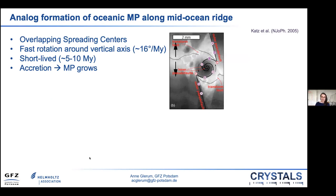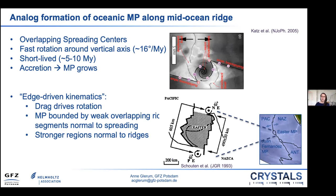What we've learned from studies like this is that oceanic microplates form between two overlapping spreading centers. They rotate fast around the vertical axis and are short-lived — five to ten million years — and during their lifetime they keep growing. Schout et al. formulated a kinematic model called edge-driven kinematics for oceanic microplates like Easter, stating that the drag of the major plates on the microplate drives the rotation, while the microplate is bounded by weak overlapping ridge segments on boundaries orthogonal to the spreading direction. The same mechanism is important for continental microplate rotation.